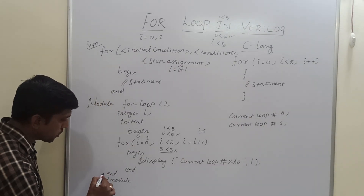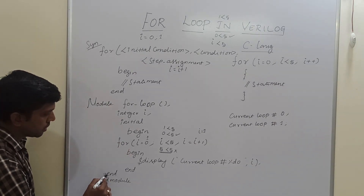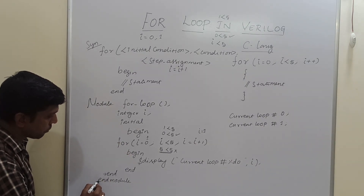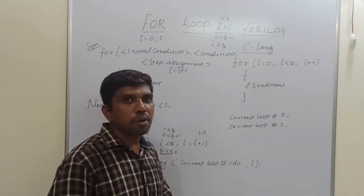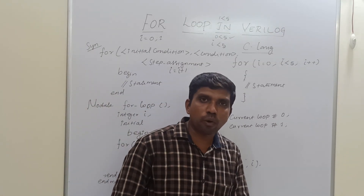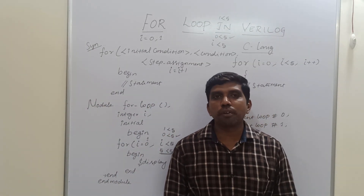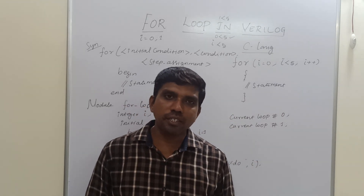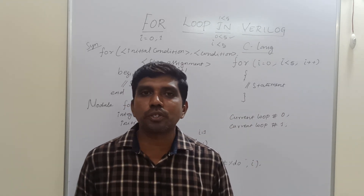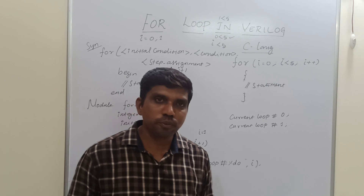Once the loop exits, we come to the end statement closing the begin block, and then end module. This is a simple way to use the for loop in Verilog HDL. I hope you understand the concept very well. If you are watching for the first time, kindly subscribe and support us to make more videos. Thanks for watching my channel. Thank you.